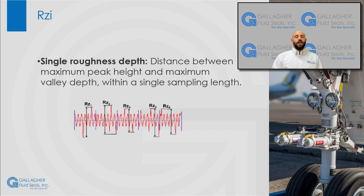The next parameter is Rzi, or single roughness depth, which is the distance between the maximum peak height and the maximum valley depth within a single sampling length. The below image shows the five different Rzi values for each of the five consecutive sampling lengths.